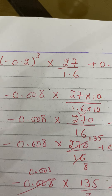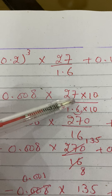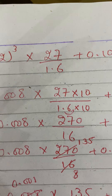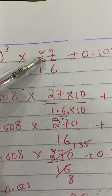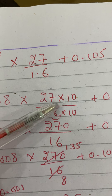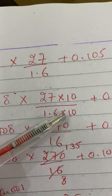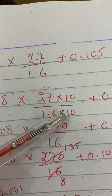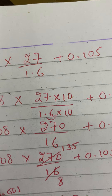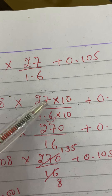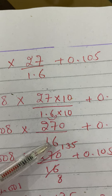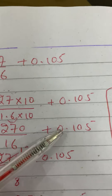Next we need to change the decimal number 1.6 in the fraction into a simple whole number. In the numerator we already have a whole number 27, so we multiply both numerator and denominator by 10. 27 multiplied by 10 gives 270, and shifting the point in 1.6 gives 16. So we have 270 over 16.